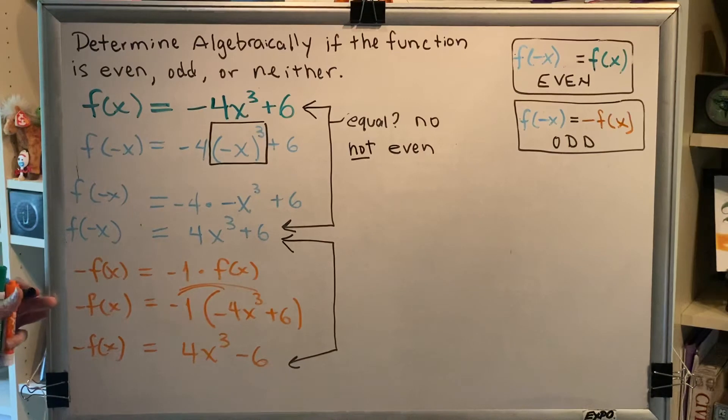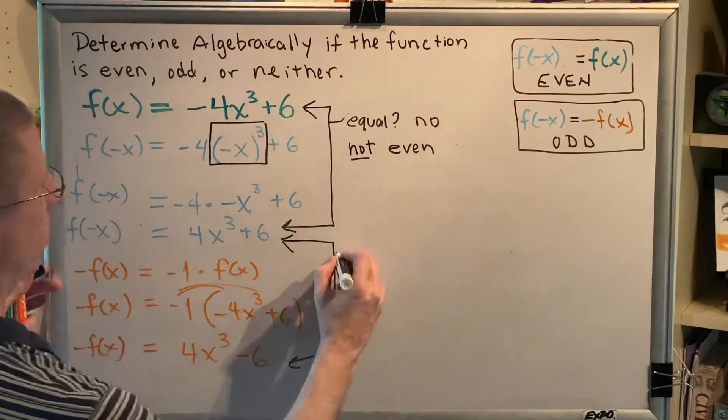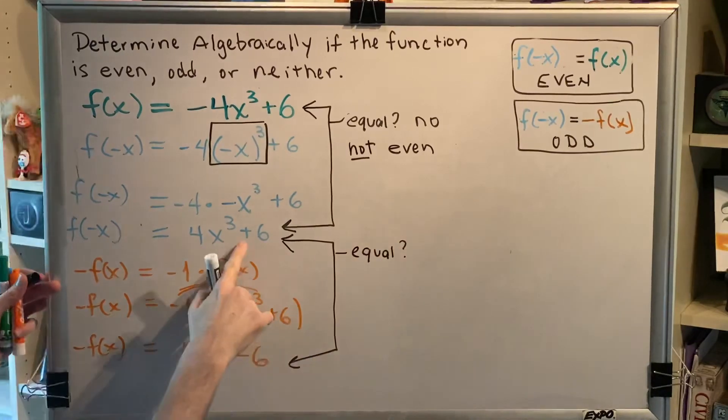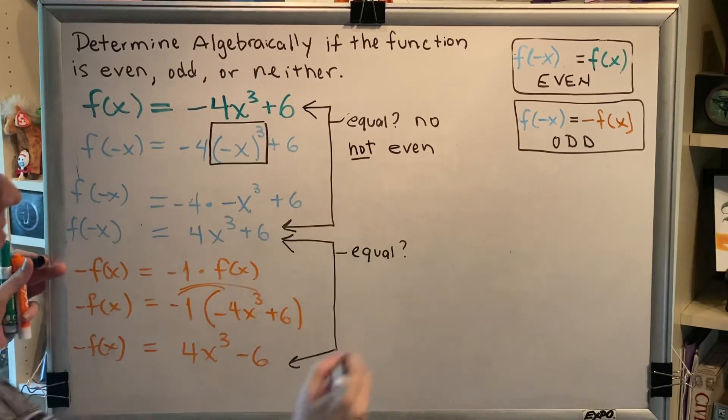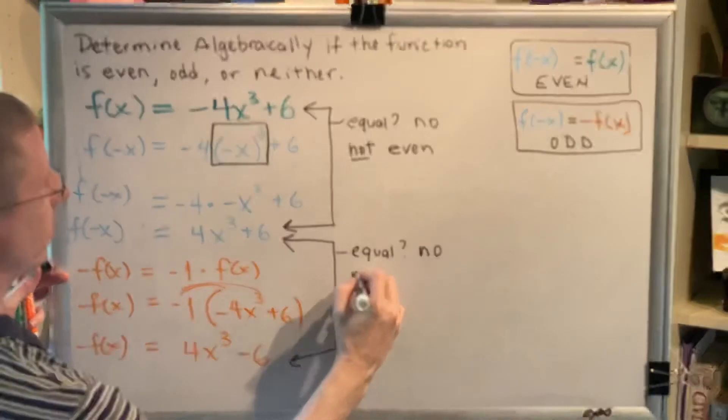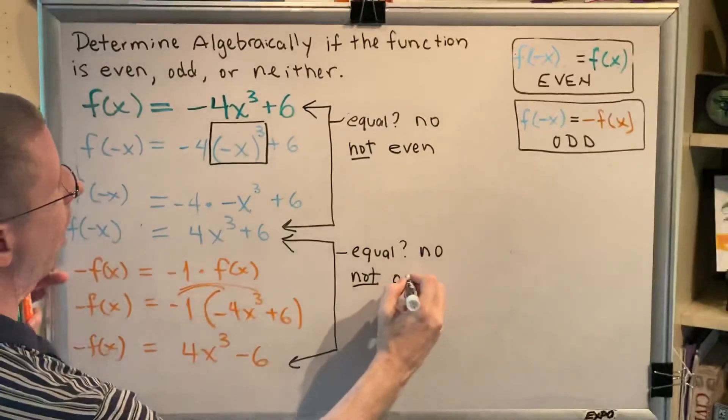What do you think? Are these the same or different? Well, they're different. This one says plus 6, this one says subtract 6, so they are not equal. Which means that the function f of x is not odd.